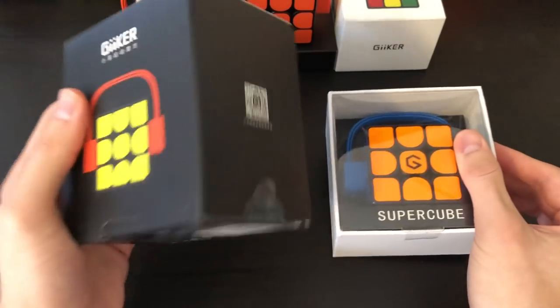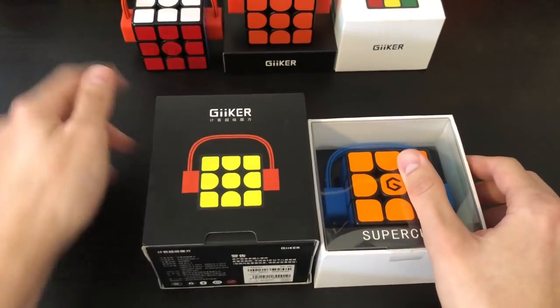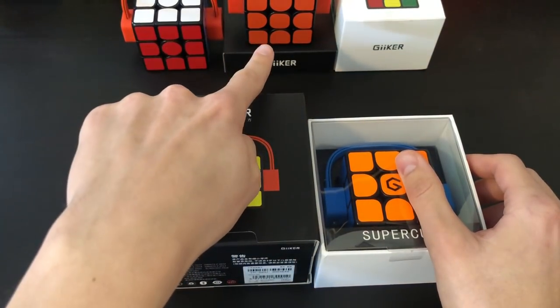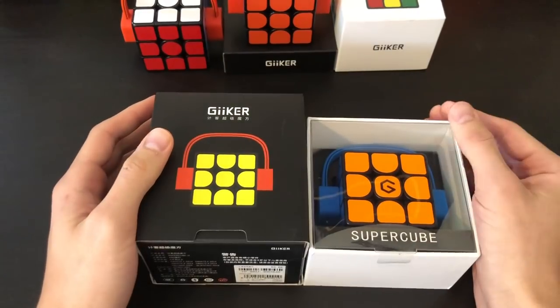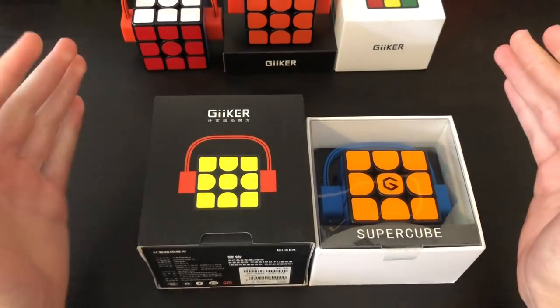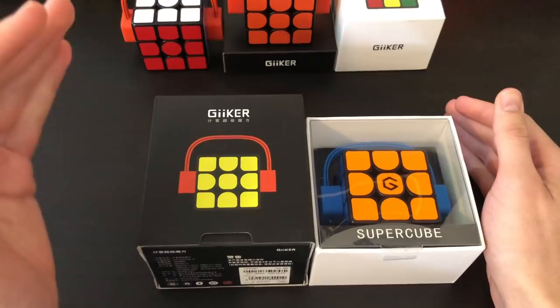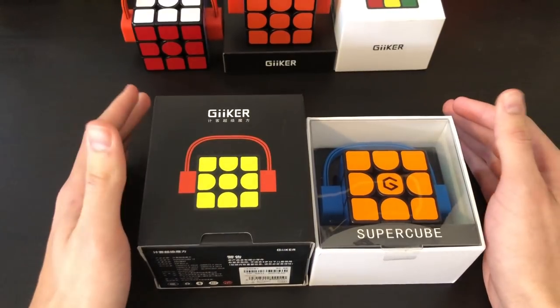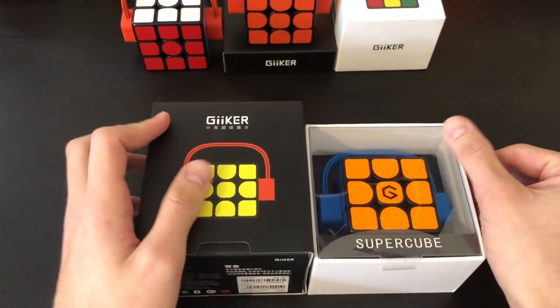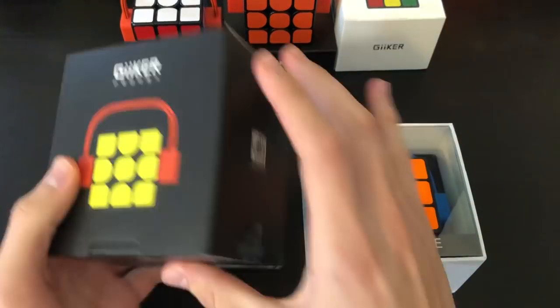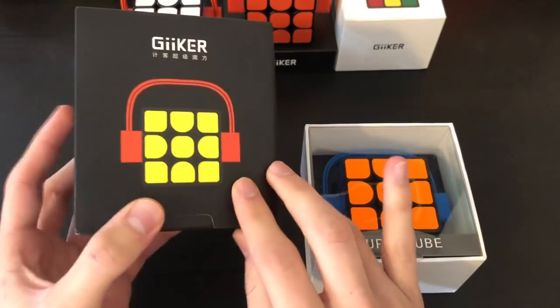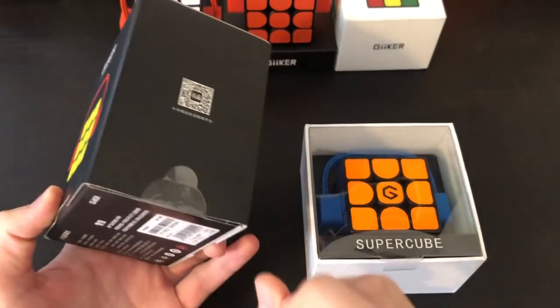Alright, so I was not expecting a regular Gicker Cube. I already have two - one I stickered myself and one I took the magnets out of. And then this third cube over here is the Gicker M3, which is the normal Gicker 3x3 that is competition legal. It doesn't have sensors in it, and it turns exactly how these two feel. However, I was not expecting this regular Gicker Cube in this package, so I will be giving this away to one of you guys.